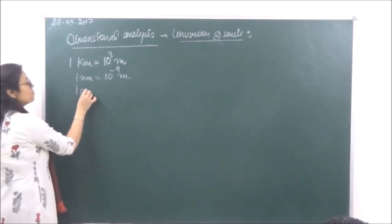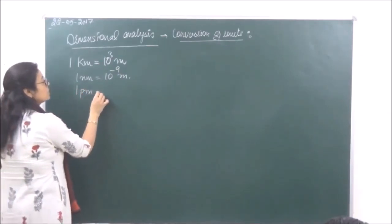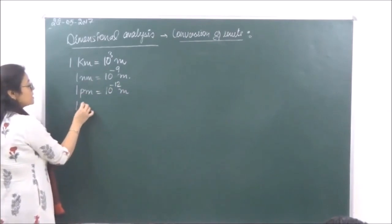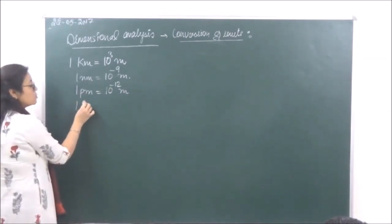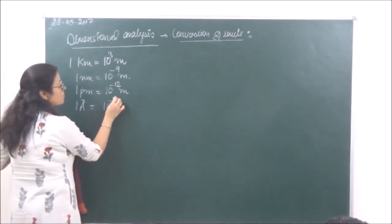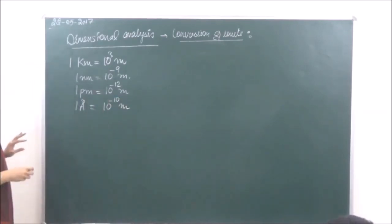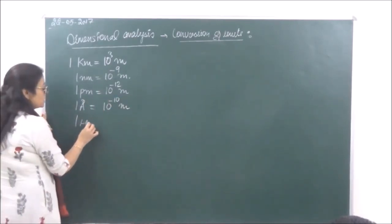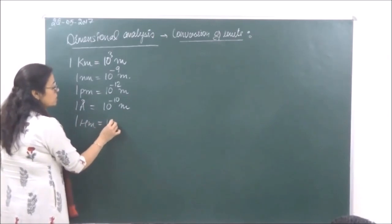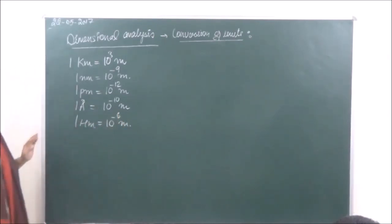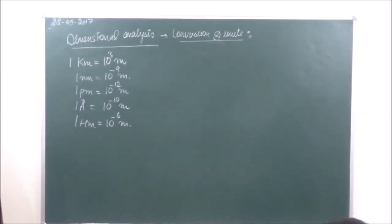If we are taking one picometer, that is 10 raised to power minus 12 meters. If we are taking one Angstrom, then 10 raised to power minus 10 meters. And if we are taking one micrometer, then that is equal to 10 raised to power minus 6 meters. So this is what for length we can convert.